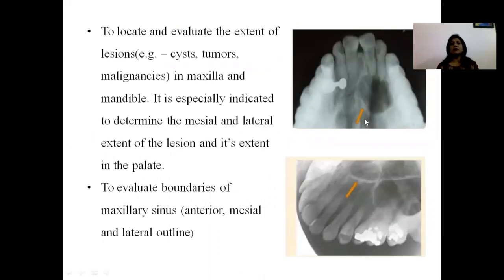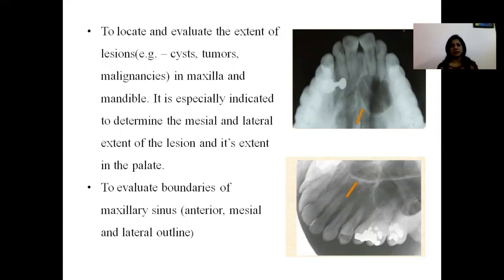Occlusal radiography is indicated to locate and evaluate the extent of lesions such as cysts, tumors, or malignancies in the maxilla and mandible. It is specially indicated to determine the mesial and lateral extent of the lesion and its extent in the palate, and to evaluate the boundaries of the maxillary sinus — anterior, mesial, and lateral. The mesial and lateral extension can be seen in the occlusal radiograph, which cannot be seen in the periapical radiograph.